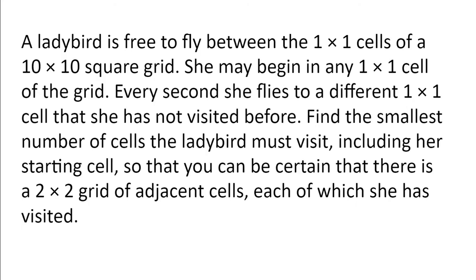A ladybird is free to fly between the 1x1 cells of a 10x10 square grid. She may begin in any 1x1 cell of the grid. Every second she flies to a different 1x1 cell that she has not visited before. Find the smallest number of cells the ladybird must visit, including her starting cell, so that you can be certain that there is a 2x2 grid of adjacent cells, each of which she has visited.